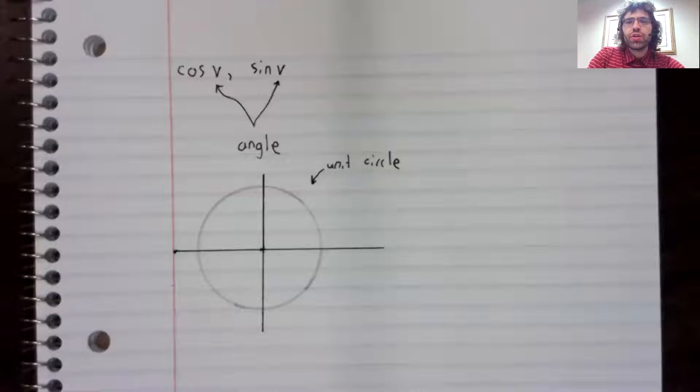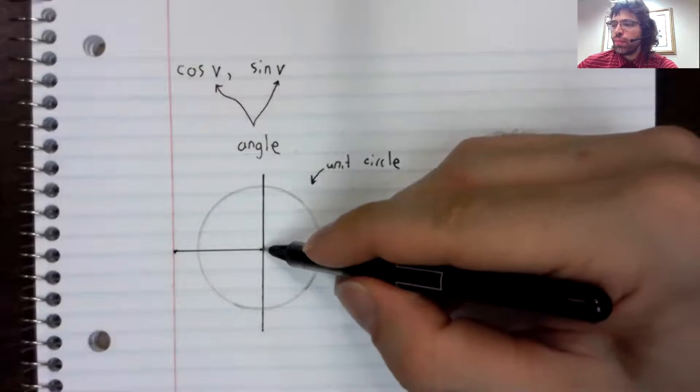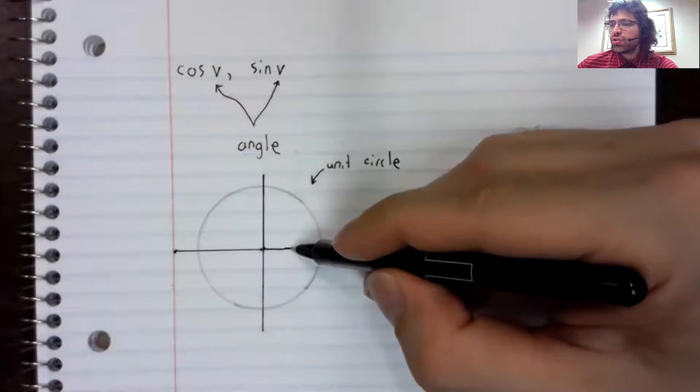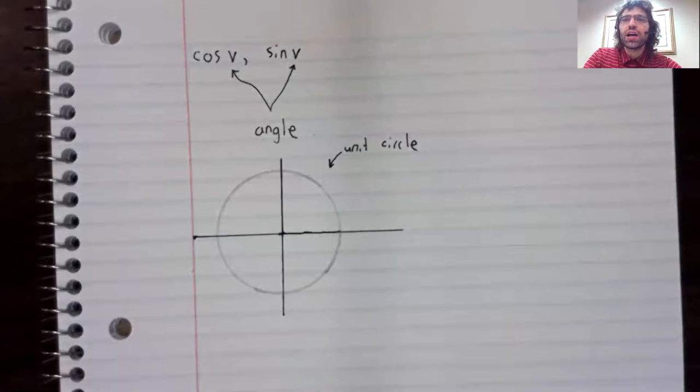In particular, if we have the unit circle, we're going to think of this v as being the angle that has this ray here as its initial side.